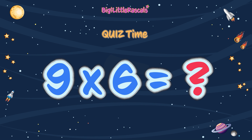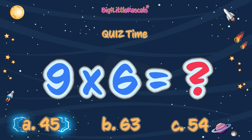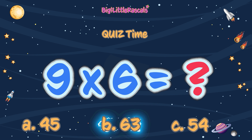9 times 6 equals: A) 45, B) 63, C) 54. What is the correct answer? Write down your answer. The answer is C, 54. Great work!